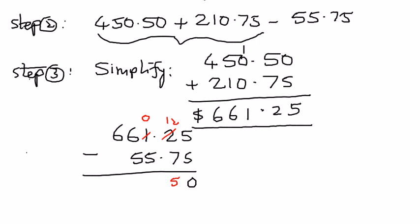Then 0 is less than 5. So we go to borrow from here. So this becomes 5 and this becomes 10. 10 minus 5 is 5. And then 5 minus 5 is equal to 0. And we do not have to borrow anything from here. Therefore, that remains as 6. So we place the decimal point right there. So the final answer, or the new balance, is equal to $605.50.